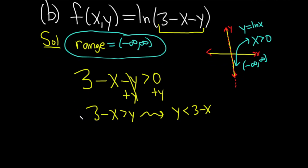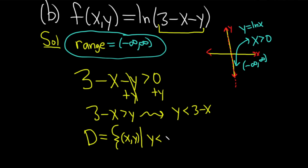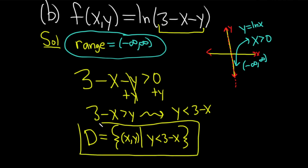Now we can write down our domain. I'll use the letter d again for domain. It's the set of all ordered pairs — you have to have that bracket notation — x comma y such that y is less than 3 minus x. There's no real condition on x, so I'll just leave it like this. That would be the domain of this function. Word of warning: the most common mistake in these problems is that people forget to put the brackets and the x and y in parentheses. Try to get into a habit of writing your answers exactly like this.